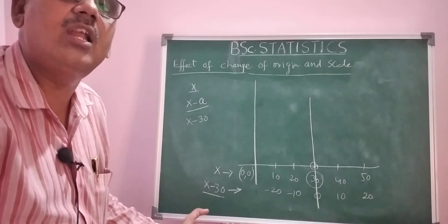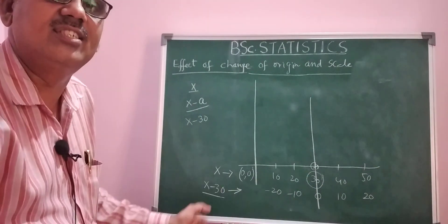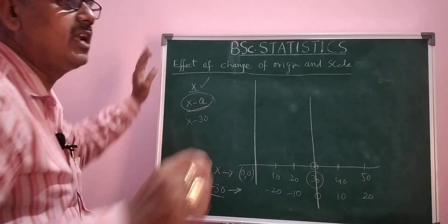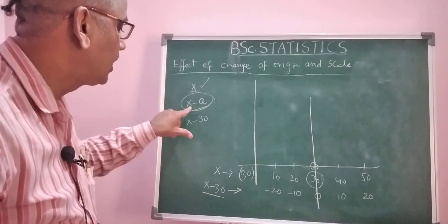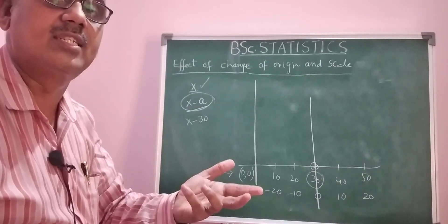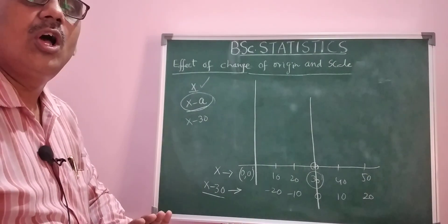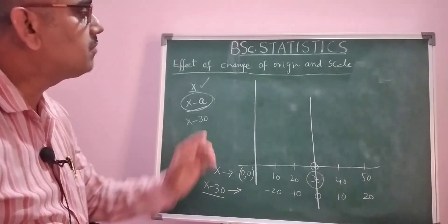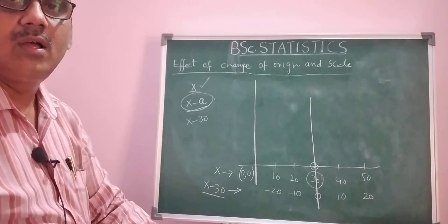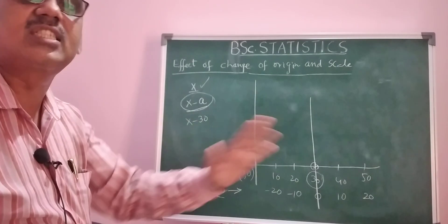Now we want to study the effect of changing the origin. Changing the origin means you calculate whatever the respective measure for x, and then also calculate it for x minus a, which explains what is the value of the effect of changing the origin. Now I am explaining what is the effect of changing the scale and the procedure of shifting the scale.